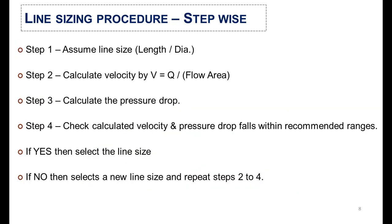The main steps for the line sizing procedure are as follows. In the first step, you assume the line size — the length and the diameter. In the second step, you calculate the velocity. In the third step, you calculate the pressure drop. In the fourth step, you check whether the velocity and pressure drop comply with recommended ranges. If they comply, your selected line size is acceptable. If not, you repeat steps two to four.